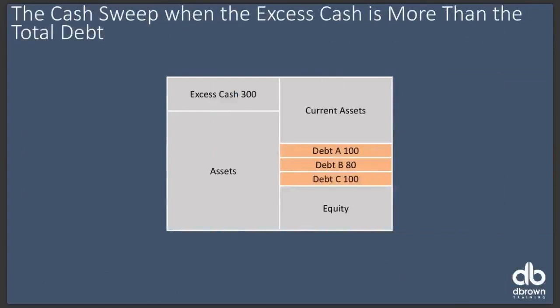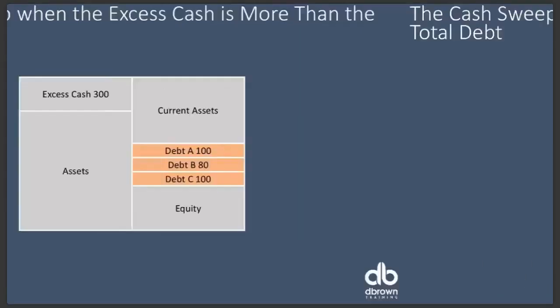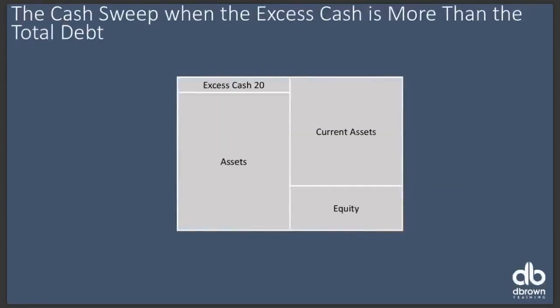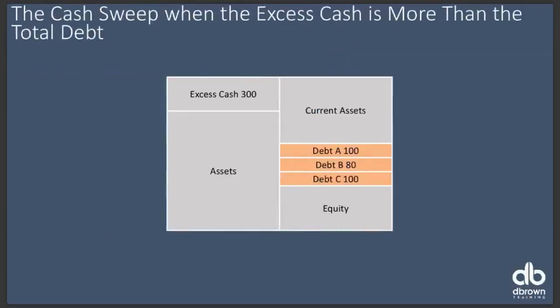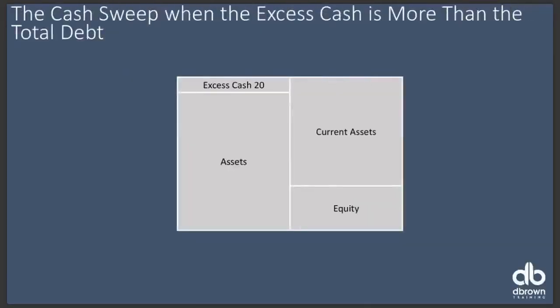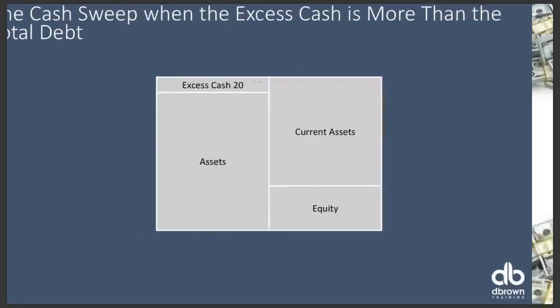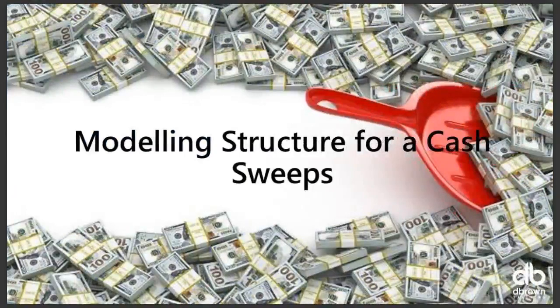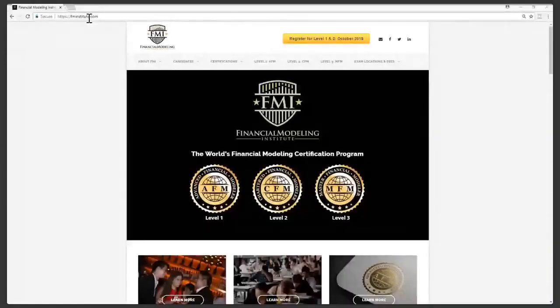What if your excess cash exceeds your total debt? Say you have 300 million in excess cash and only 280 million in debt. Simple math: you wipe out all the debt and you're left with 20 million in cash. You used 280 million of the 300 million excess cash, leaving 20 million behind. That's how you sweep when cash exceeds total debt.